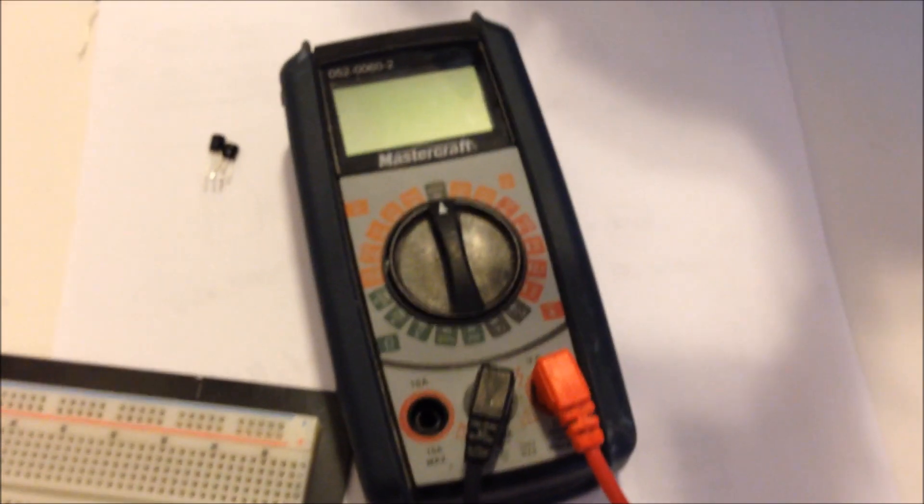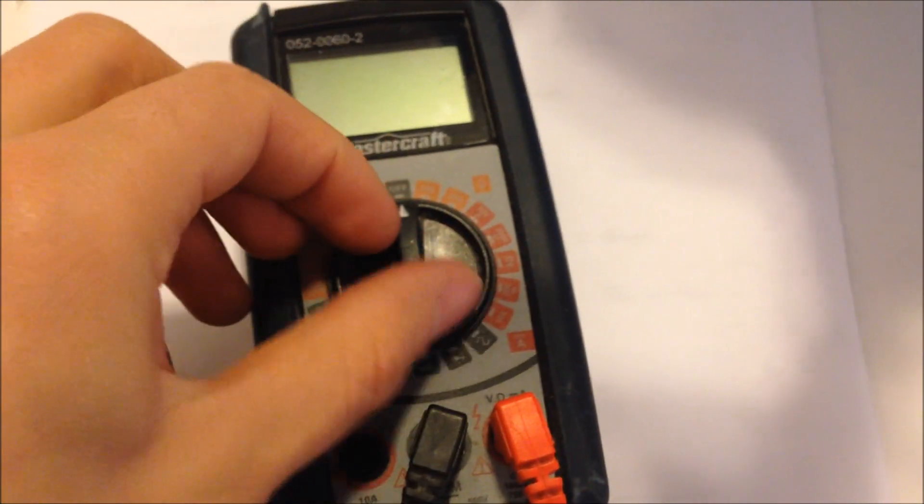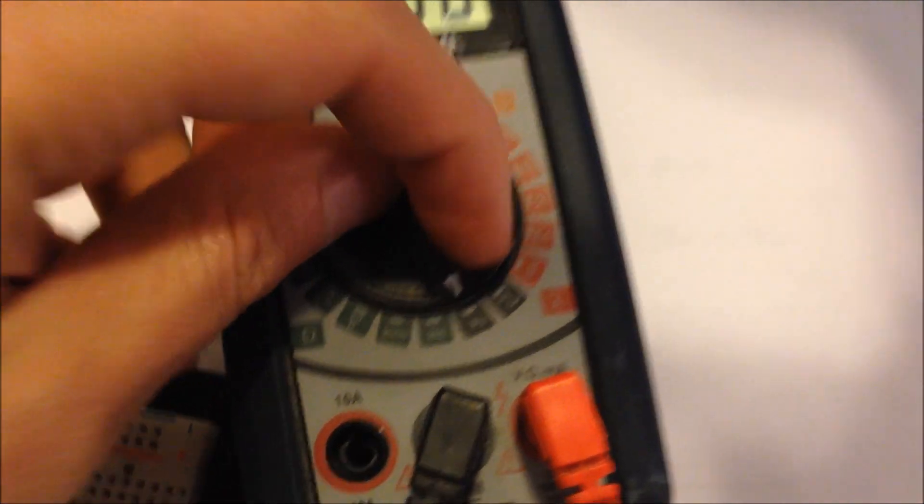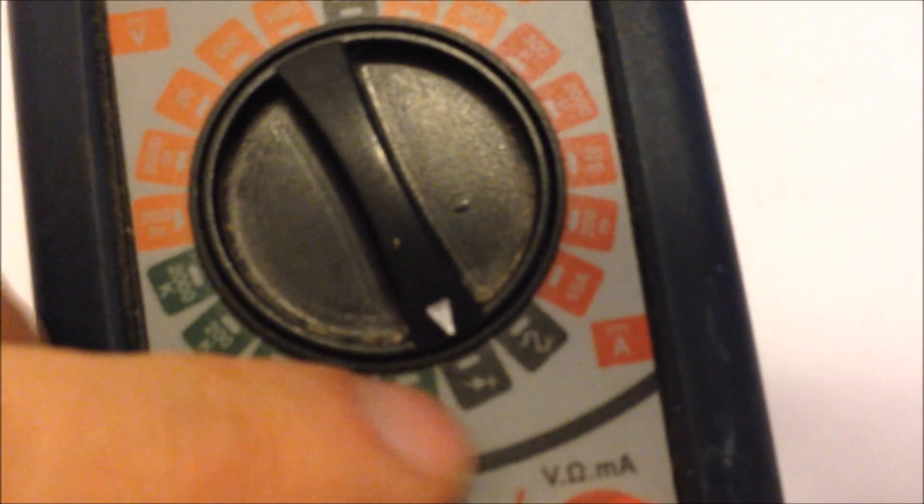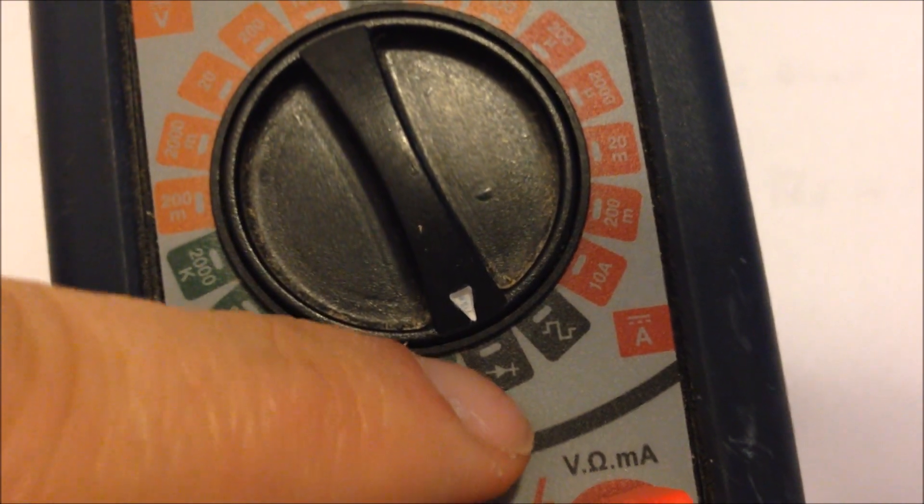So in order to test a transistor to see what it is, you're going to need a multimeter. The multimeter I'm using right now is just a basic MasterCraft multimeter. What you want to do is set the multimeter to the diode testing setting, as indicated by that symbol right there. You want that symbol right there for diode test.